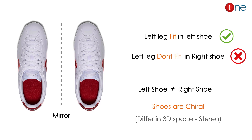Before getting to that, we should know chirality. Chirality means the structure and shapes differ in 3D space. You can understand it by a shoe — the left shoe doesn't fit the right leg and the right shoe doesn't fit the left leg. So left shoe is definitely not equal to right shoe. Shoes are chiral because they differ in 3D space, which is called stereo — technically it's stereochemistry. The shoes have a mirror image relationship, which is called enantiomers. So you should know chirality.